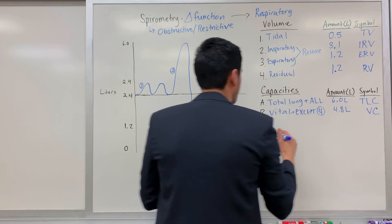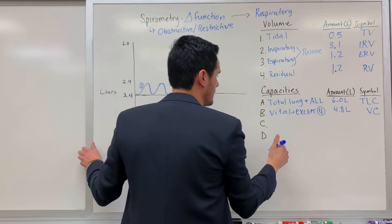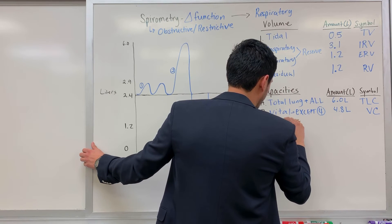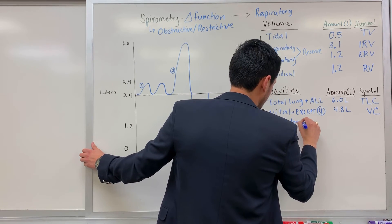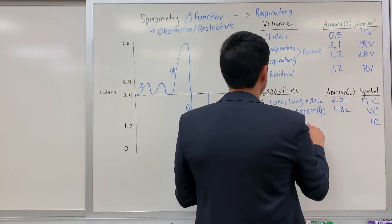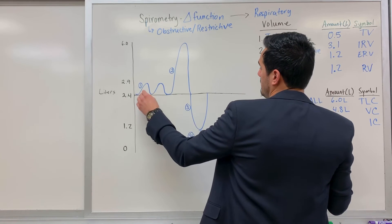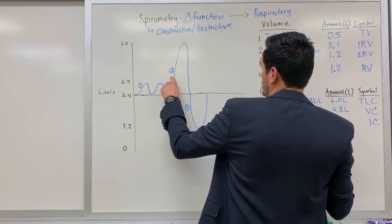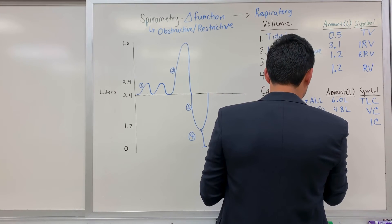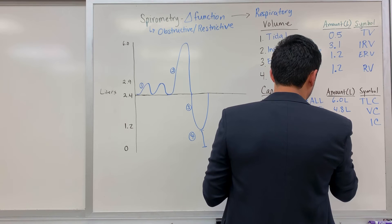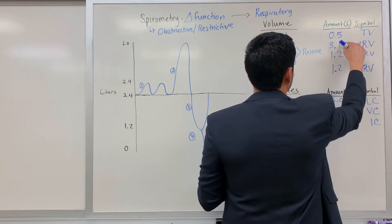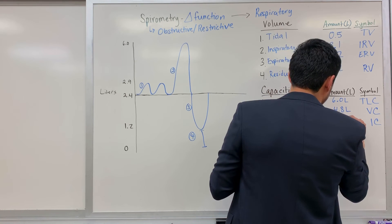The next one for the capacities is what's known as the inspiratory capacity, denoted as IC. We're including the amount of air, the tidal volume as well as how much we can forcefully inhale. So for inspiratory it's just value one plus value two, and a typical value would be 3.6 liters.